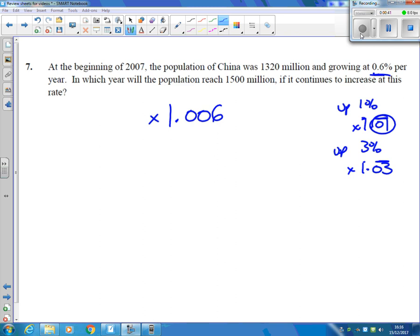And we're going to times that for N years or X years. The value we started with was 1,320 million. I'm going to ignore the word million. And that has to equal, we want to know, when does that reach 1,500 million?